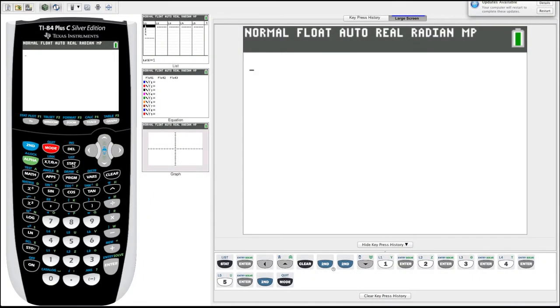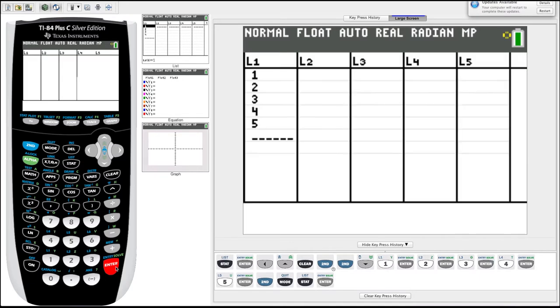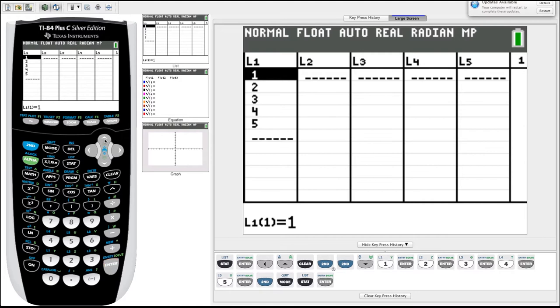We're going to start by showing you how to enter your data into lists. So we go over to our calculator, we're going to hit stat. We're going to pick one, so we're going to go to edit, enter. Looks like we have some old data in our list, so we'll show you how to clear that. You just need to arrow up to list one. We will hit clear, hit enter again, it'll clear the list.